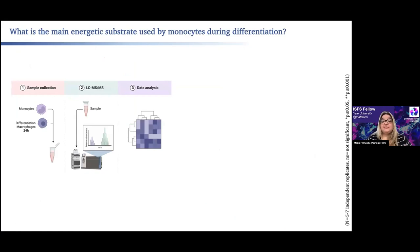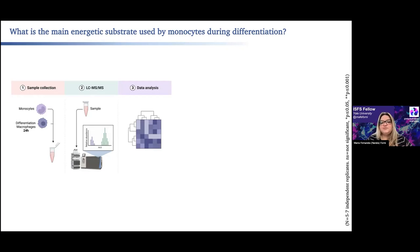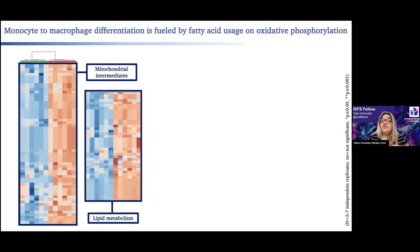Once we established that adipocytes were producing these extracellular vesicles, we wanted to understand whether monocytes were uptaking them and what they were doing with the lipid content. We performed an untargeted and targeted metabolomics during monocyte-to-macrophage differentiation to see which metabolic substrates were being used. We found that not only mitochondrial intermediates were highly abundant during differentiation, but there was also a strong representation of lipid building blocks, showing that these lipids are being used for the differentiation itself.